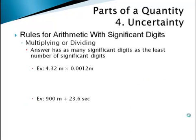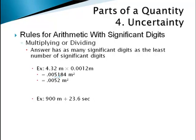When multiplying or dividing, the rule is a little different: your answer needs to have as many significant digits as the measurement with the fewest significant digits. For example, multiplying 4.32 meters by 0.0012 meters to get an area: 4.32 has three significant digits and 0.0012 has two, so the answer can only have two significant digits. Multiplying normally gives 0.005184 square meters, which we round to 0.0052 square meters.